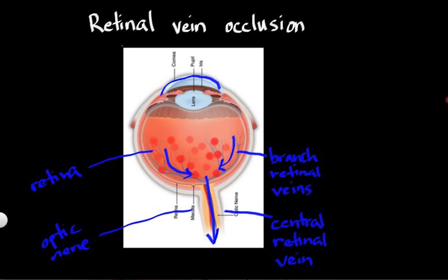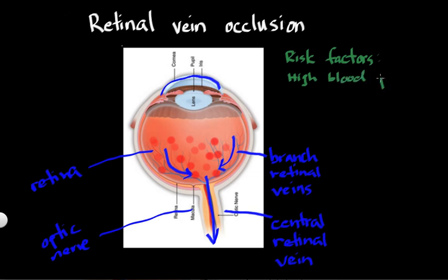So why do retinal vein occlusions happen and who gets them? Let's talk about the risk factors. We know that one million Americans suffer from retinal vein occlusions, but who exactly is at risk? The risk factors have to do with those factors which affect your blood vessels. High blood pressure — hypertension — is probably the biggest risk factor. Just like high blood pressure puts you at risk for heart attacks and strokes, it puts you at risk for a retinal vein occlusion, and if you've had one, it puts you at risk for additional ones. The other big risk factor is diabetes, a disease that affects the blood vessels in your body, which can lead to damaged blood vessels and increased risk for a retinal vein occlusion.